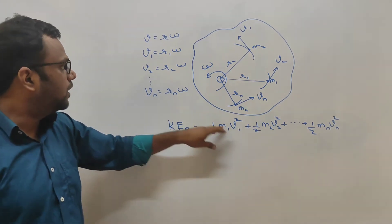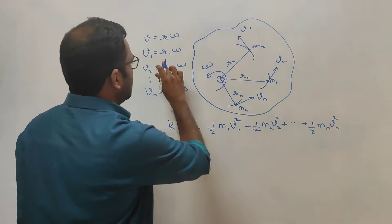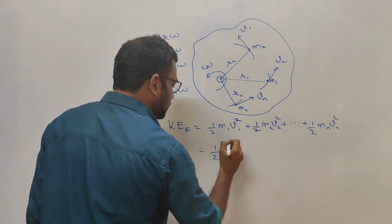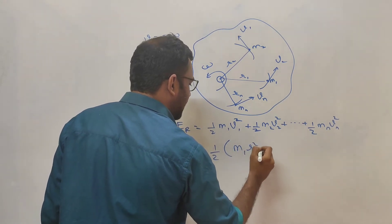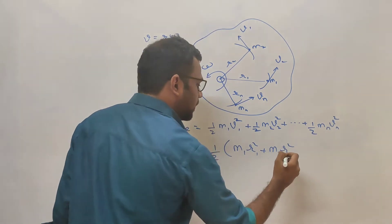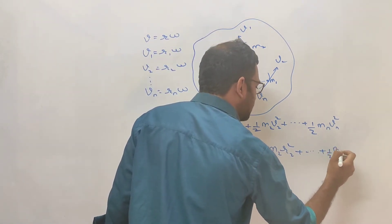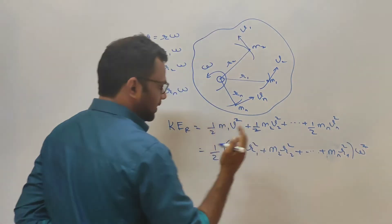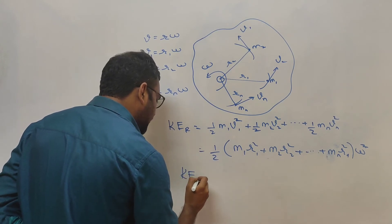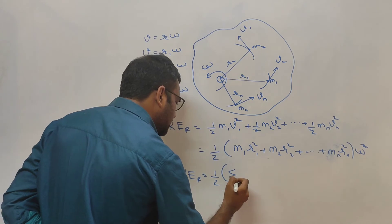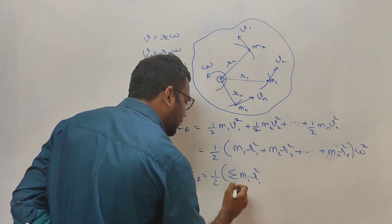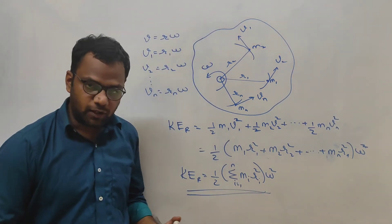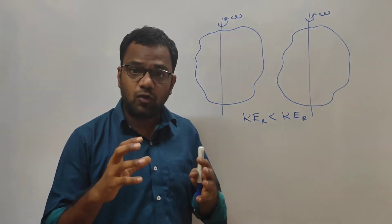Substituting v = rω, each v² becomes r²ω². Factoring out the common terms ½ and ω², we are left with: ½(m1r1² + m2r2² + ... + mnrn²)ω². So the rotational kinetic energy of any body can be written as ½ × (Σmᵢrᵢ²) × ω², where i varies from 1 to n. This is the rotational kinetic energy of any body.